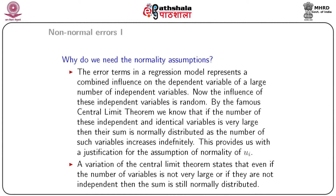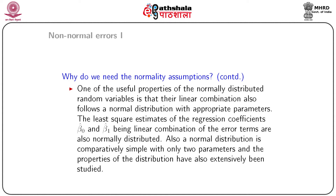The influence of the independent variables on our dependent variable y is random. By the famous central limit theorem, if the number of independent or identical variables is very large, their sum is normally distributed as the number of variables increases indefinitely. This provides justification for the normality assumption of Ui. A variation of the central limit theorem also states that even if the number of variables is not very large or they are not independent, the sum is still normally distributed.